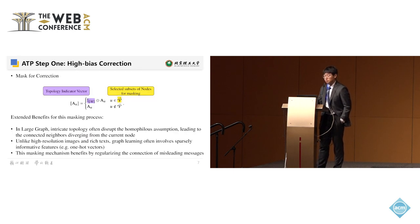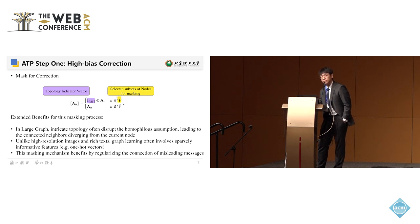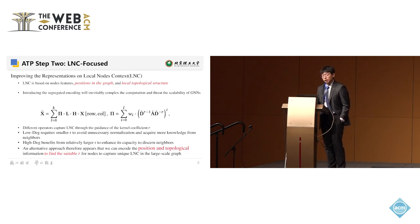There is also a side benefit to the masking mechanism: in a large graph, intricate topology does not always follow homophily assumptions, causing nodes at the center of the graph with high connectivity to be misled by neighboring information. Unlike high-resolution images or rich text, graph learning often involves sparsely informative features. Our masking mechanism therefore regulates the flow of misleading information into high-degree nodes.